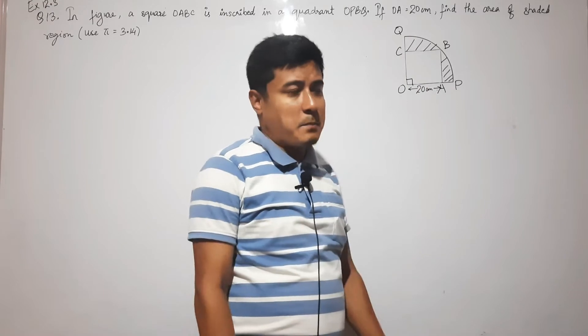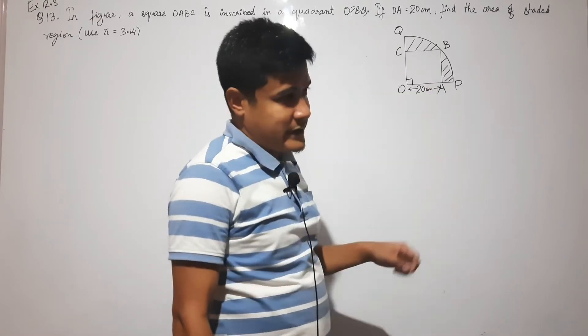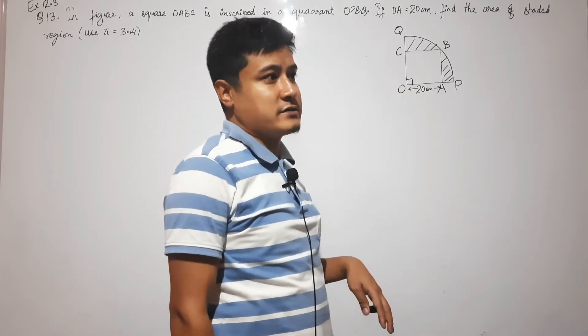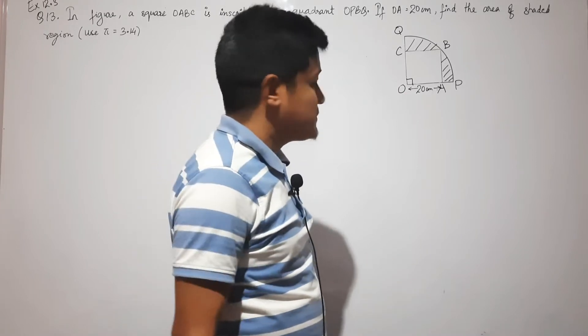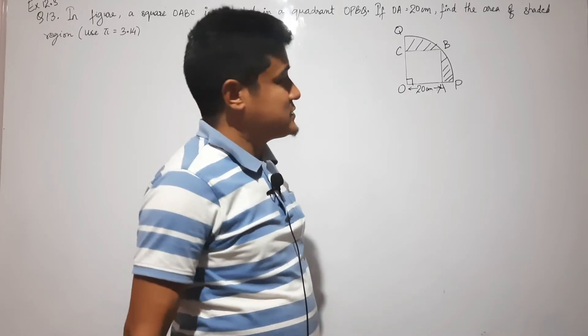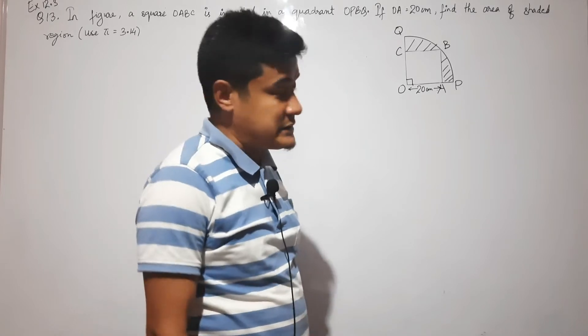Area of the quadrant minus area of the square. For the quadrant sector with 90 degrees: 90/360 × πr². But the radius hasn't been given.